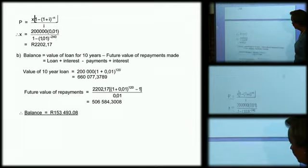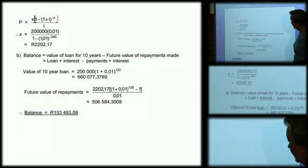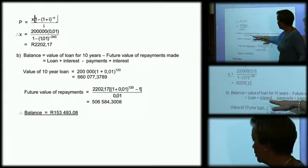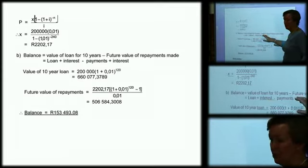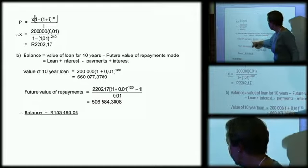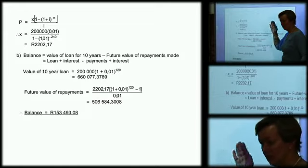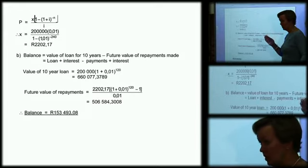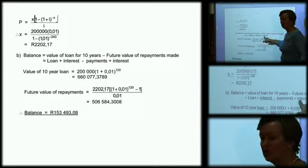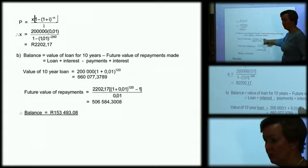So what you have to work out is if he took the loan out for 10 years, what would it cost him? Not the 20 years. Because he's reduced his time, it's 10 years, what would be the 200,000 plus the interest for 10 years? That's where the 120 comes from. That's what the loan has come to.